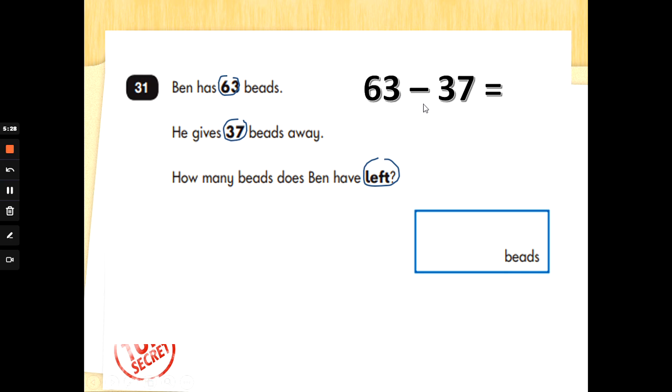So we're having a go at 63 take away 37. Now we can do 6 tens take away 3 tens. That makes mathematical sense. But we can't do 3 take away 7. You can't take a small number from a bigger number. So we're going to have to break it down. We're going to have to do 63 take away the 30 first.